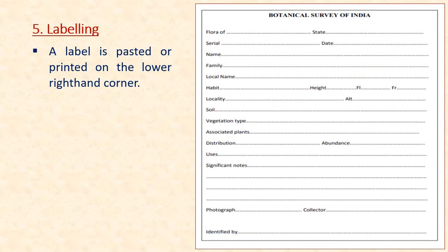The fifth step is labeling. A label is pasted or printed on the lower right-hand corner of a herbarium sheet. The label should indicate the following information: locality, altitude, soil type, vegetation type, associated plants, habit, date and time of collection, name of the collector, common name, scientific name, and other information related to the plant specimen.